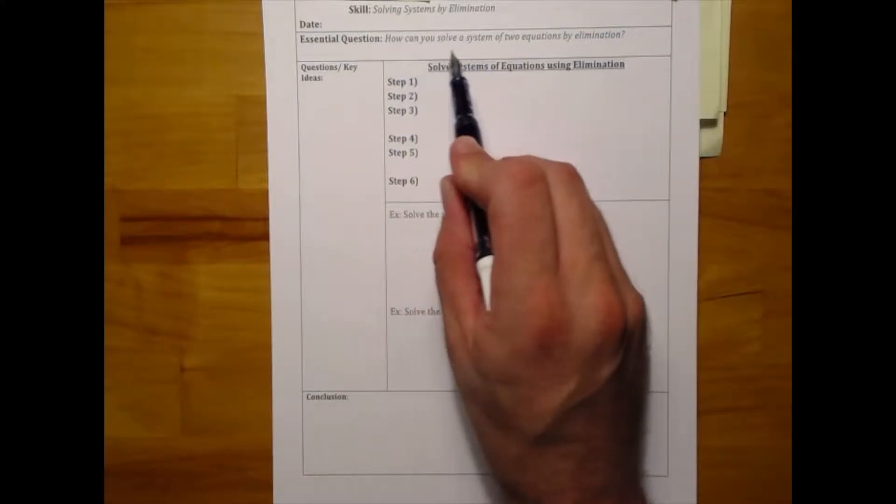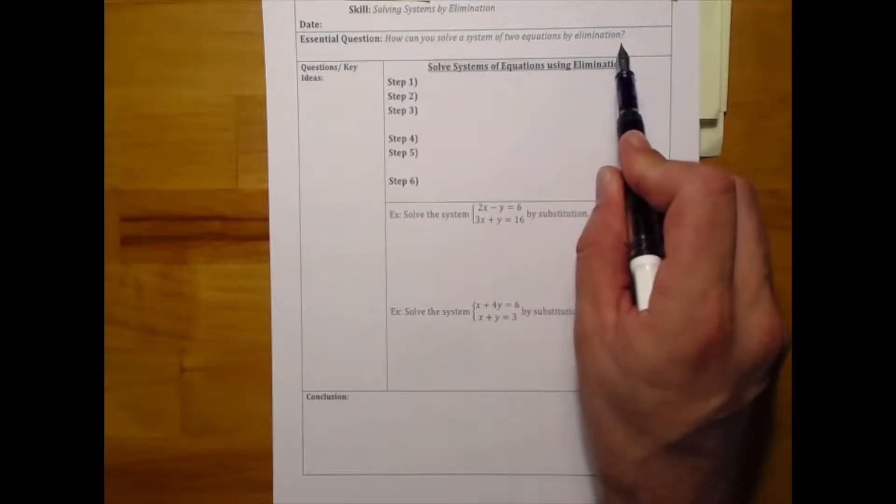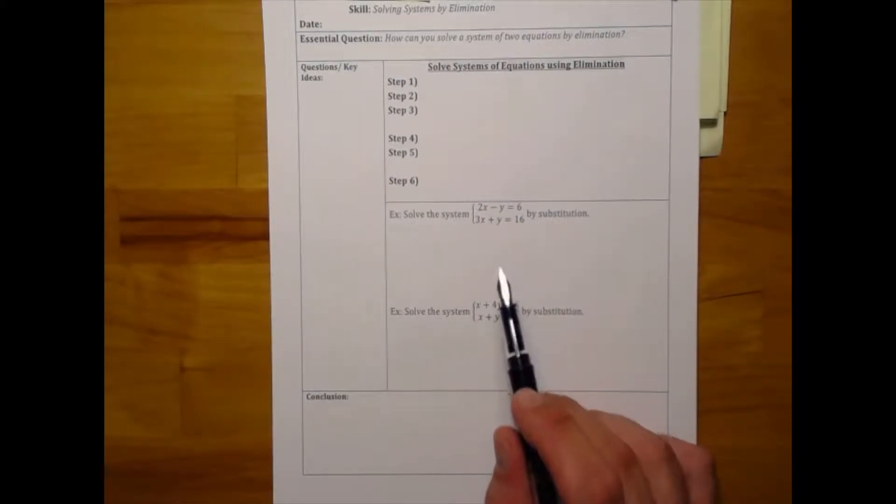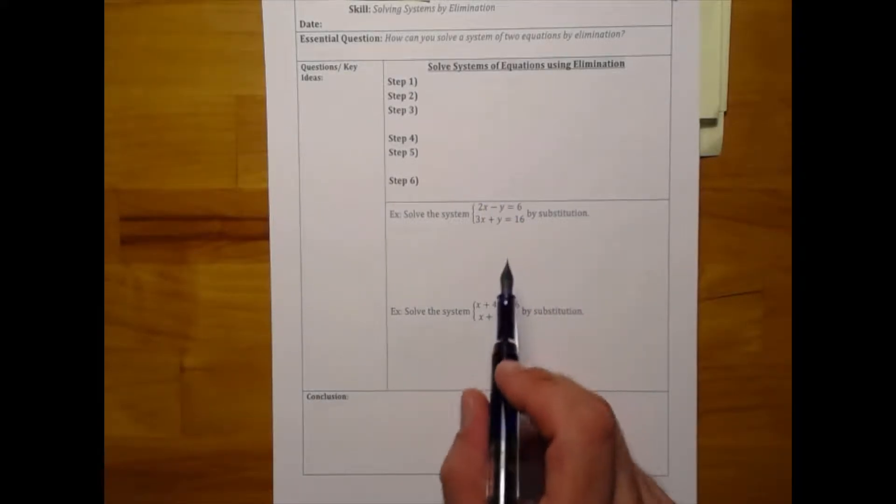This time we're going to be looking at solving systems using elimination and answering the question, how can you solve a system of two equations by elimination? We're going to be making six steps to do this.